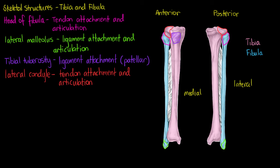Our knee joint forms here, interacting with the lateral condyle and with the medial condyle. The articular surface where the femur and tibia are going to interact is right here — right at the top of that condyle on the superior surface, and on the posterior there as well.